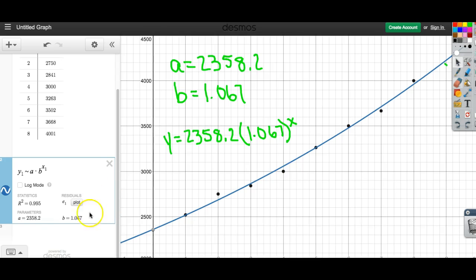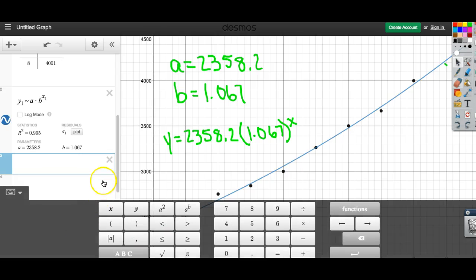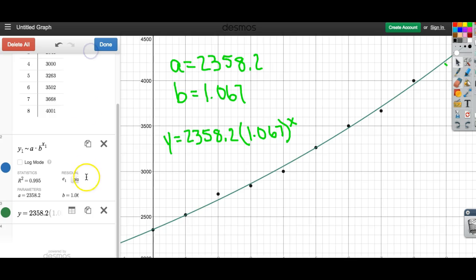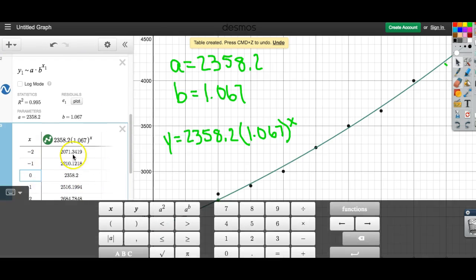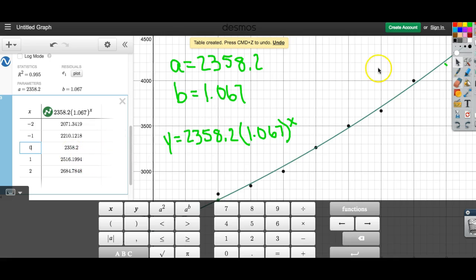You can also throw that equation in and then convert it to a table. And you can throw any value in you want. Let's say I wanted to know what about year 9. That'd be up here. If I didn't want to trace it, throw that in there. You can see it puts a dot in. Here's our value.